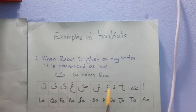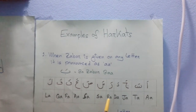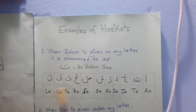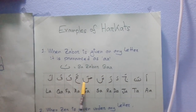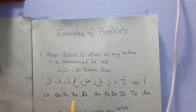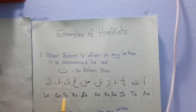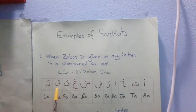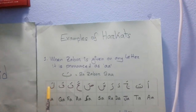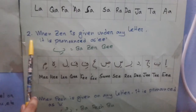Dal — Zawur — Da; Ra — Zawur — Ra; Sin — Zawur — Sa; Swad — Zawur — Sa; Ain — Zawur — A; Fa — Zawur — Fa; Kaf — Zawur — Ka; Lam — Zawur — La.